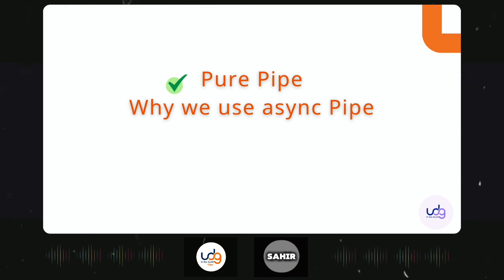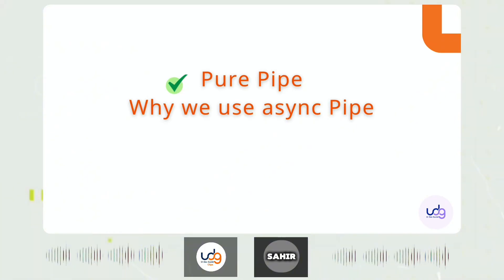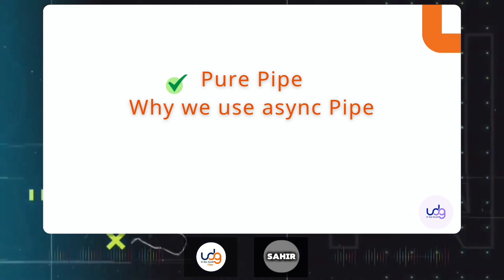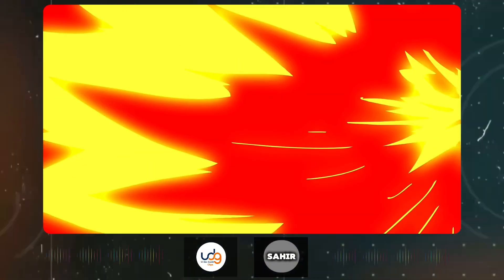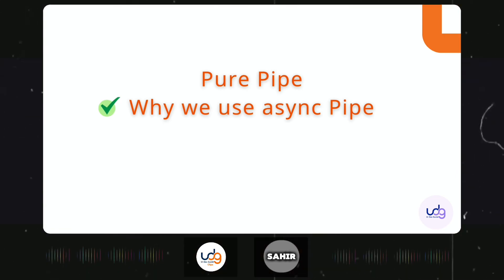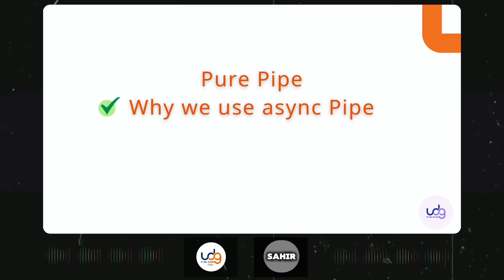Interviewer: Have you heard about the async pipe? Candidate: Yes. Interviewer: Is it pure or impure? Candidate: It must be impure — I'm not very sure. Interviewer: Yes, that's the example I was asking about — it's an impure pipe. Why do we use the async pipe? Candidate: One feature is that we can subscribe and unsubscribe observables directly in the HTML template itself, rather than subscribing and unsubscribing in the TypeScript file.